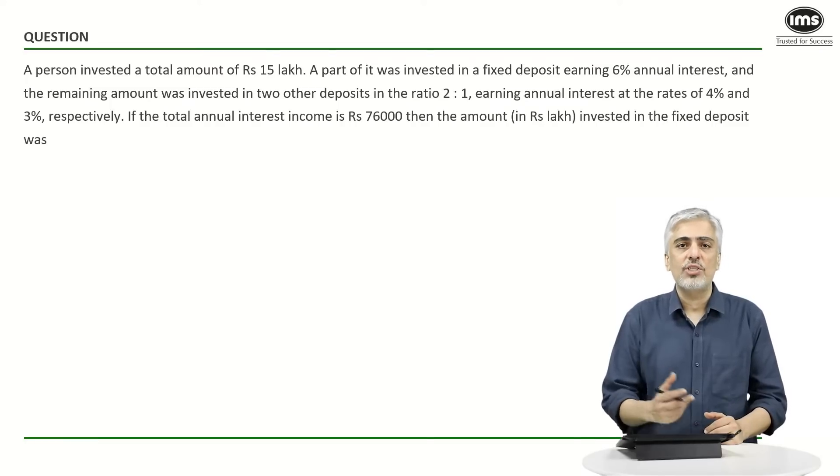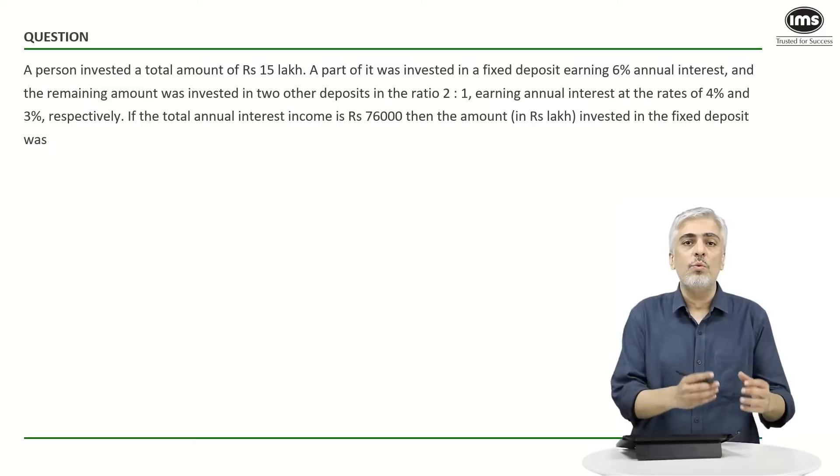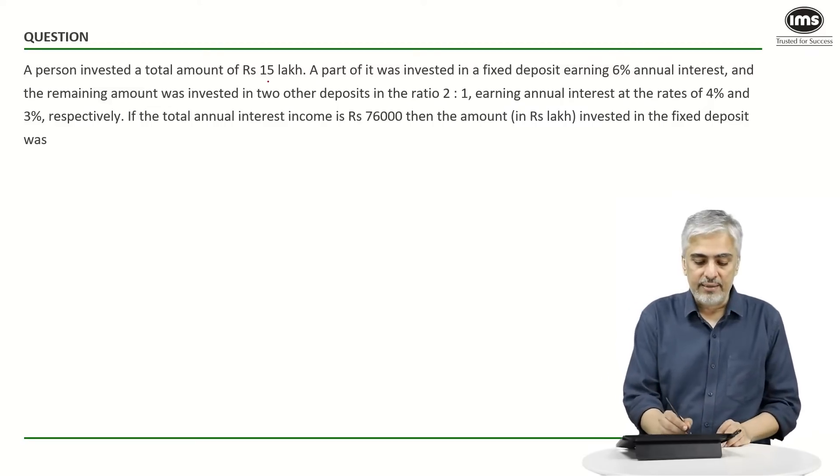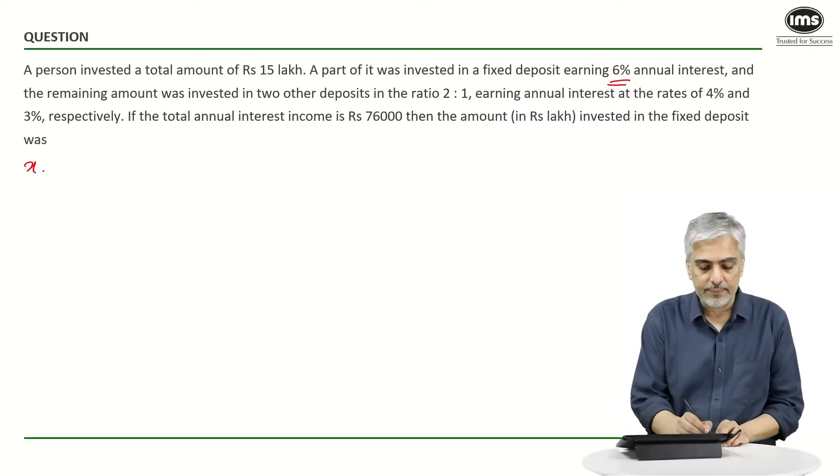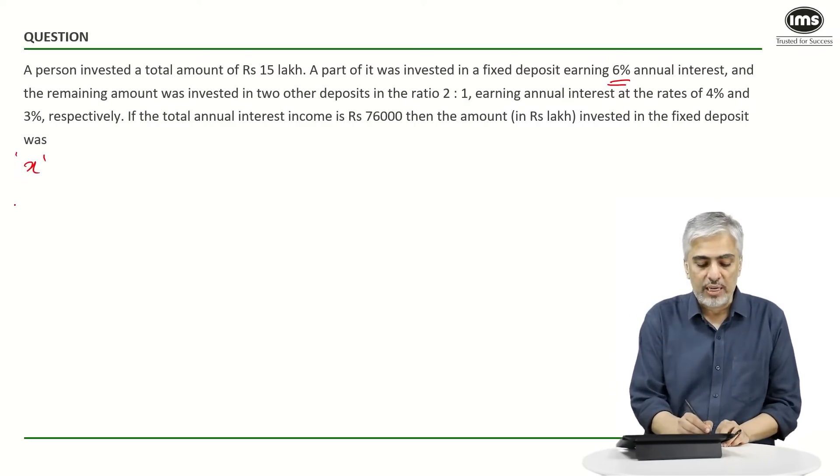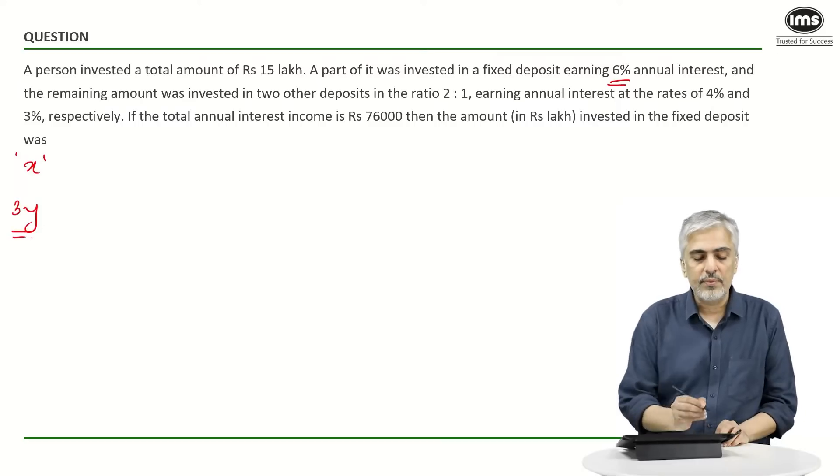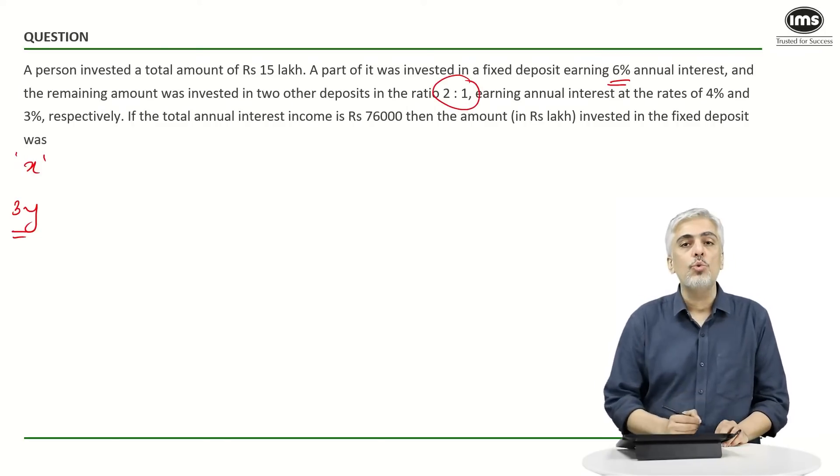So let's start with this. Let's try and understand the question. If I say, let the amount invested at 6%, which I want to find, be x, and the remaining amount if I take it as 3y. Now why have I taken it as 3y? So it becomes easy for me to break it up in the ratio 2:1.